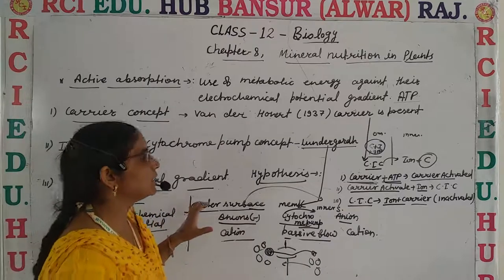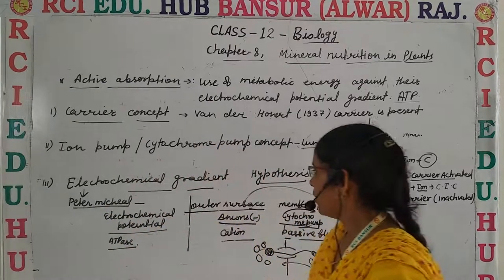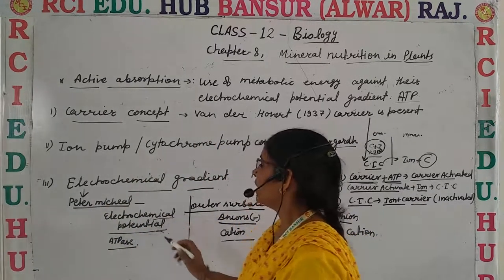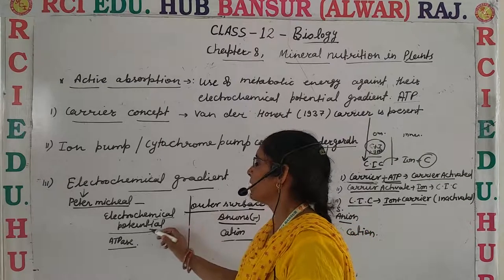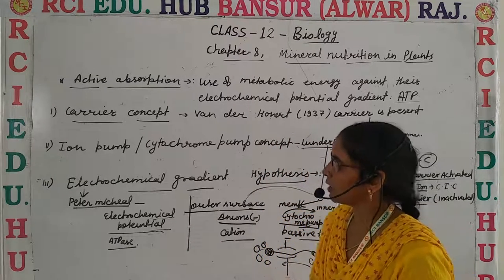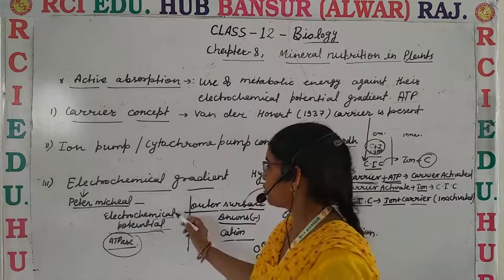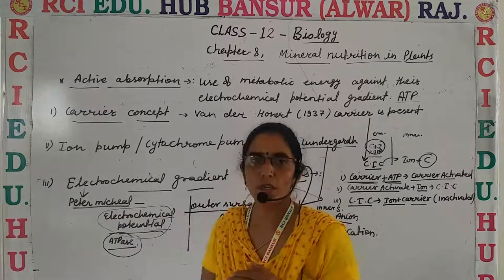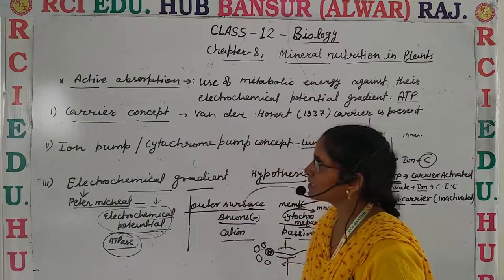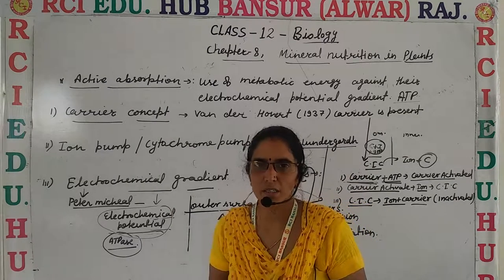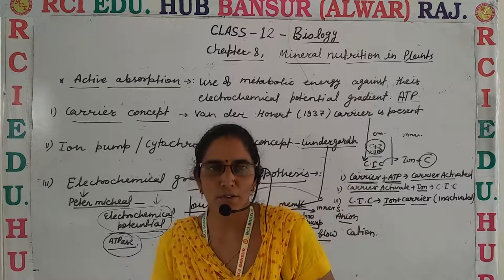The third theory is the Electrochemical Gradient Hypothesis, given by Peter Mitchell. He explains that anions and cations are moved through the surface based on the electrochemical potential developed between the inner and outer surface. ATPase plays a very vital role in this. The electrochemical potential is generated due to concentration difference or pressure difference. These are the three theories explaining active absorption of ions between the inner and outer surface. Please like, comment, share, and subscribe. Goodbye.